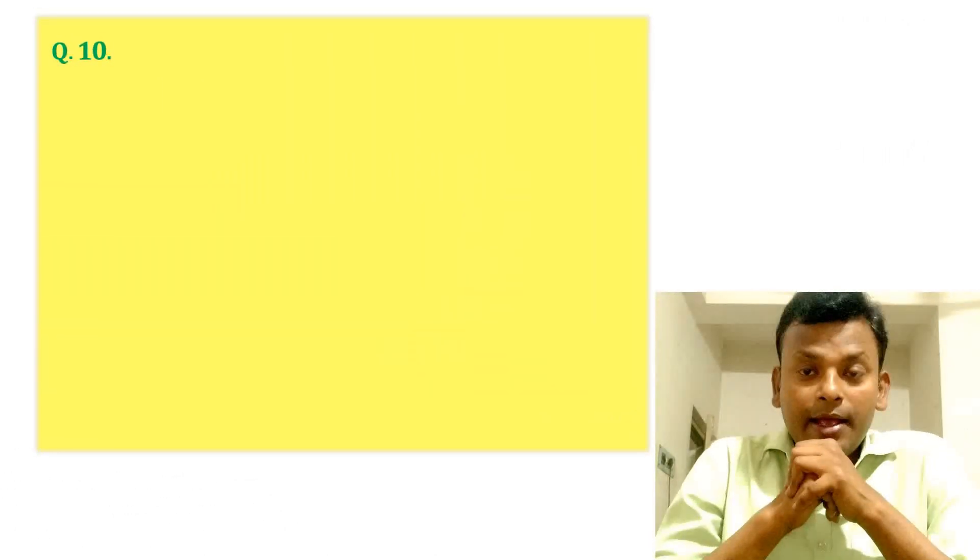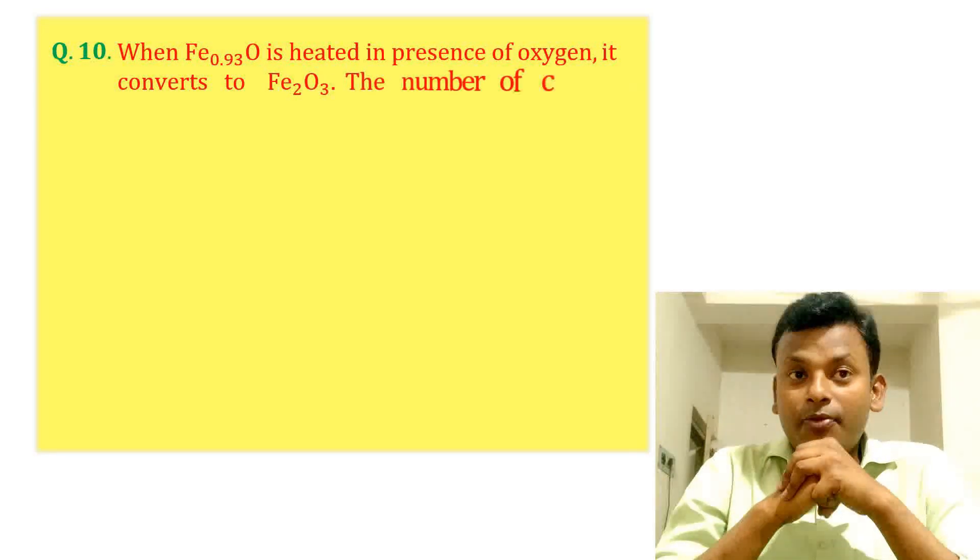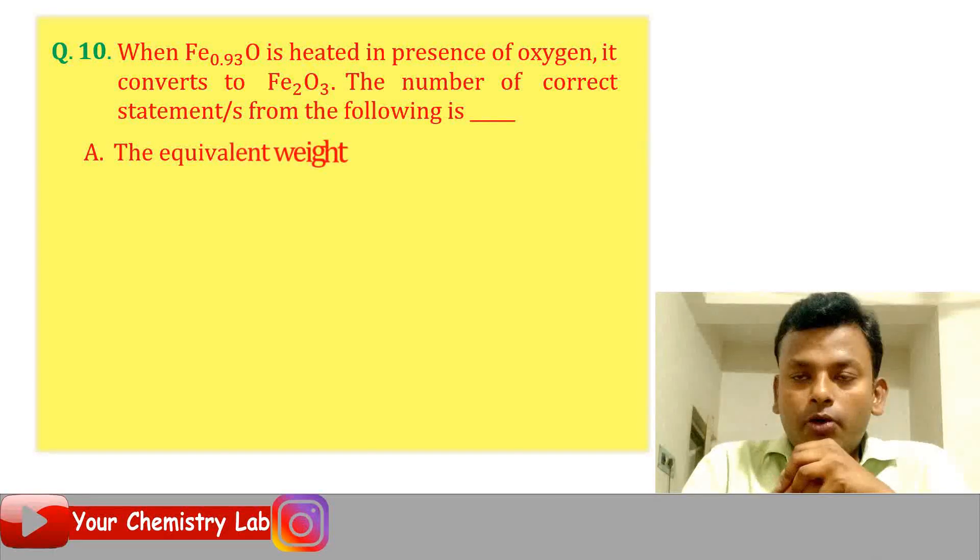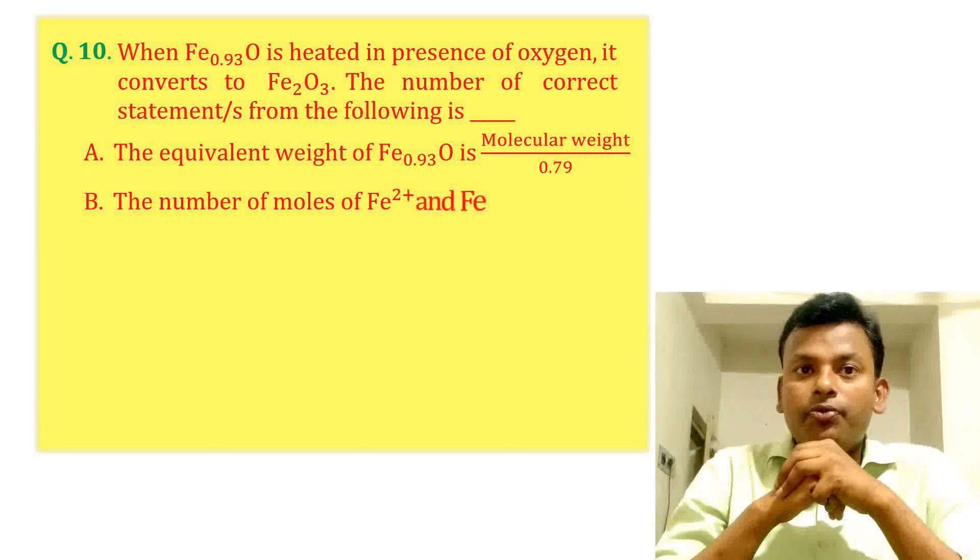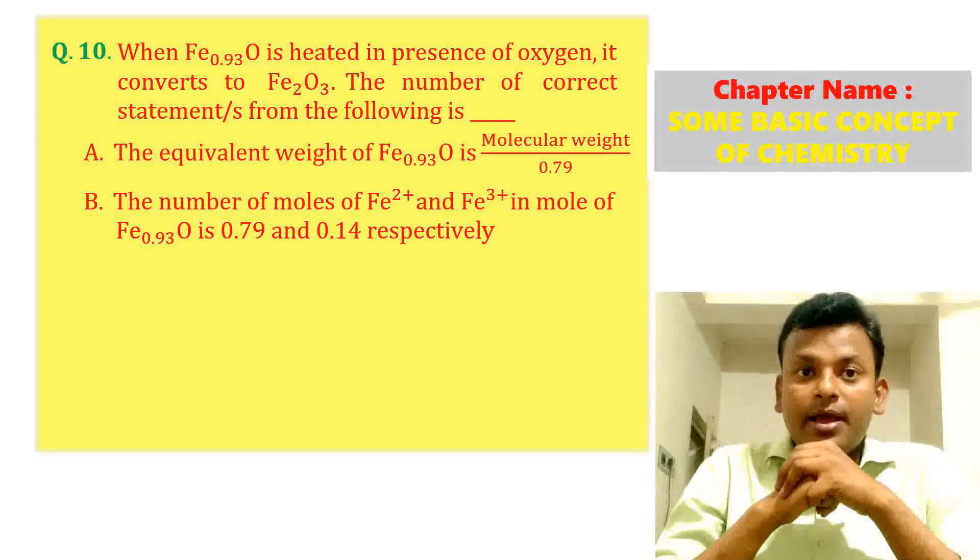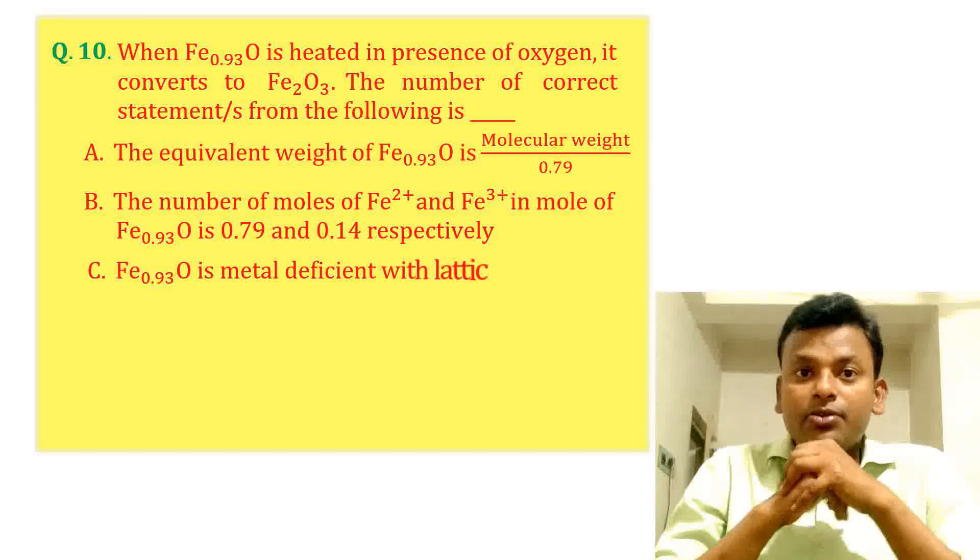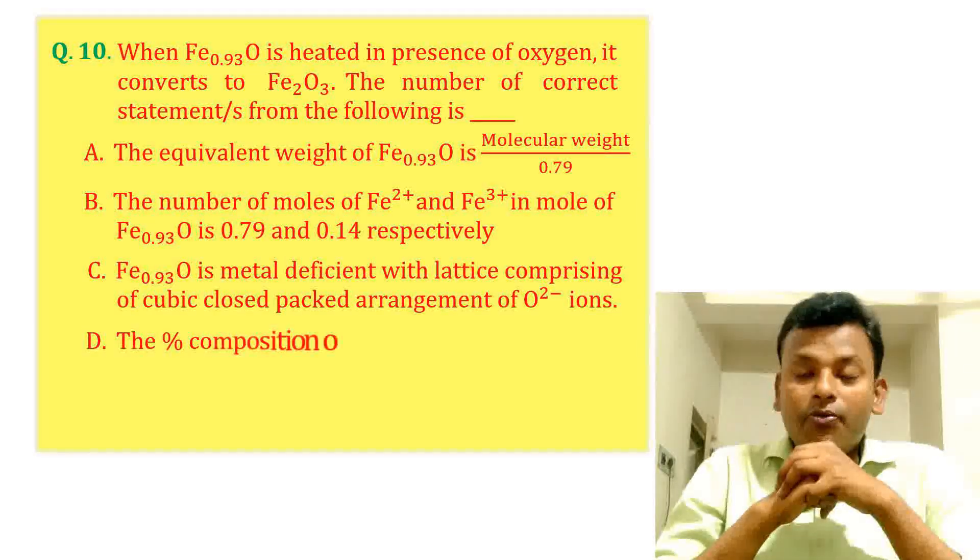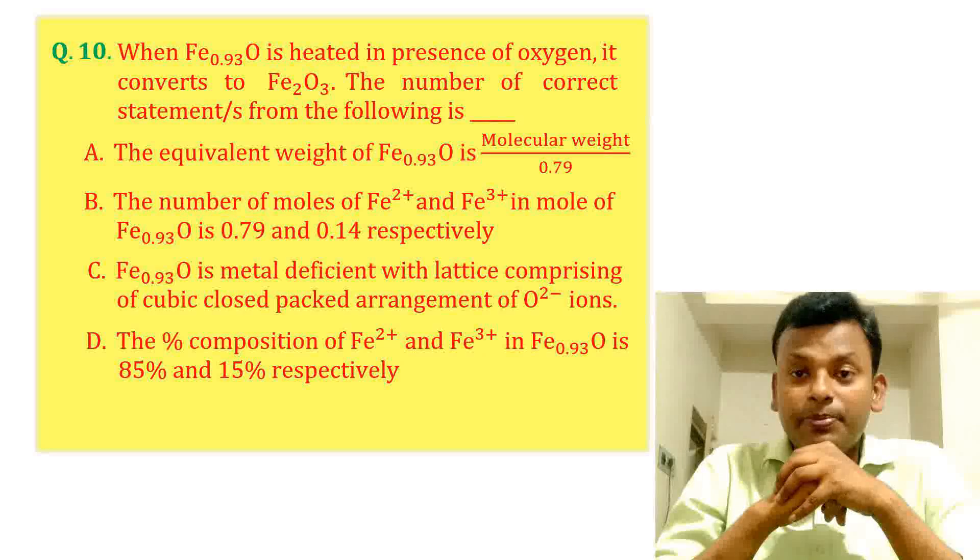Question 10: When Fe0.93O is heated in presence of oxygen, it converted to Fe2O3. The number of correct statements from the following is: A. The equivalent weight of Fe0.93O is molecular weight by 0.79. B. The number of moles of Fe2 plus and Fe3 plus in Fe0.93O is 0.79 and 0.14 respectively. C. Fe0.93O is metal deficient with lattice composition of cubic close packing arrangement of O2 minus ions. D. The percentage composition of Fe2 plus and Fe3 plus in Fe0.93O is 85% and 15% respectively.